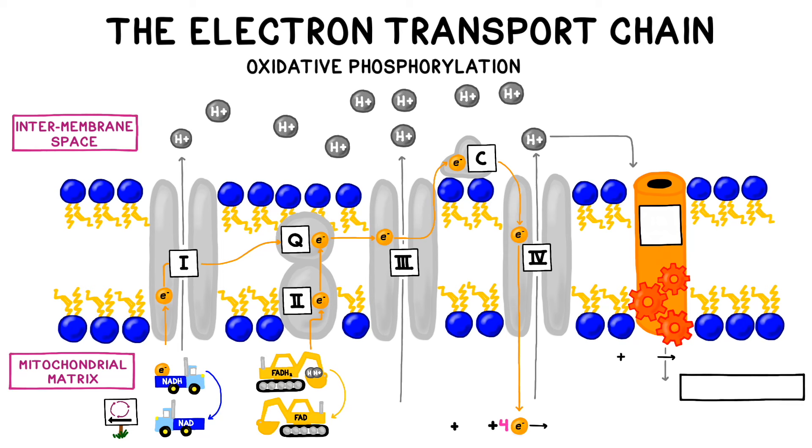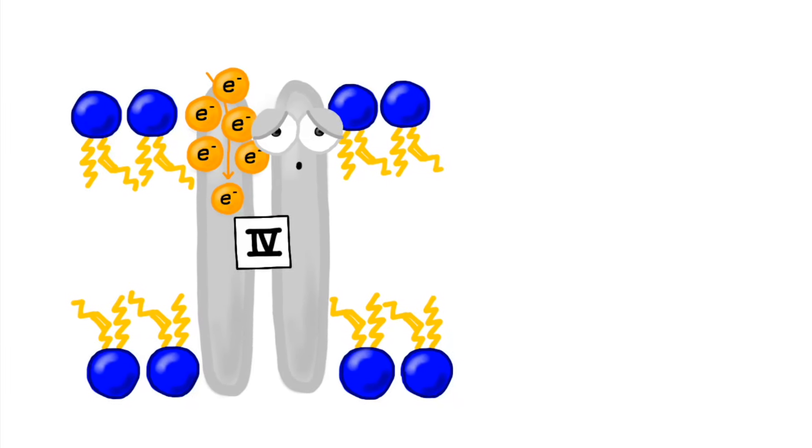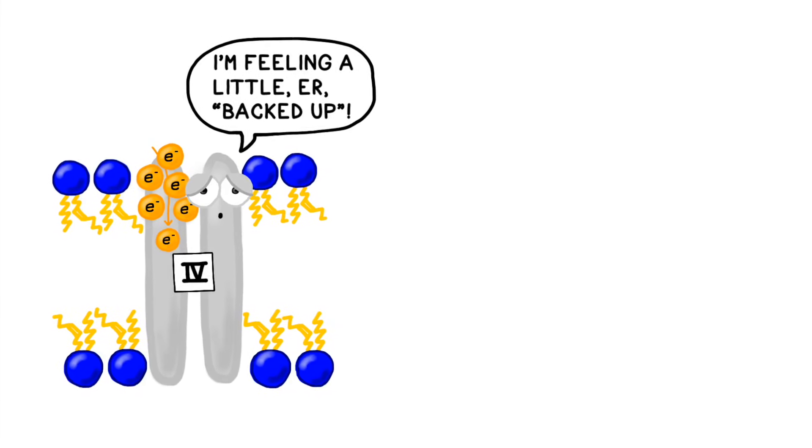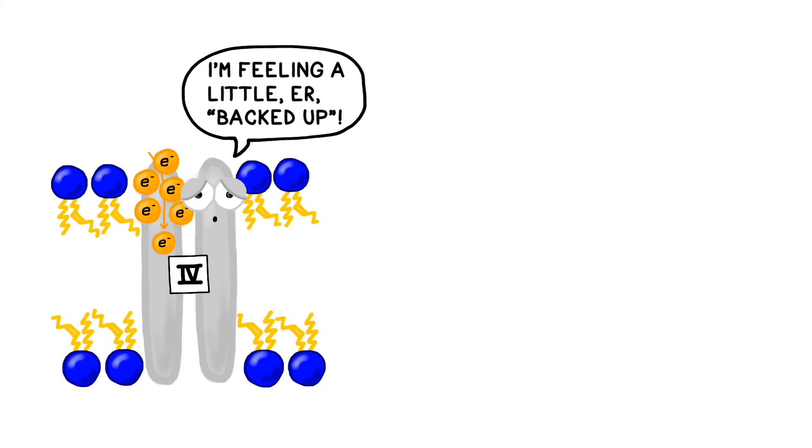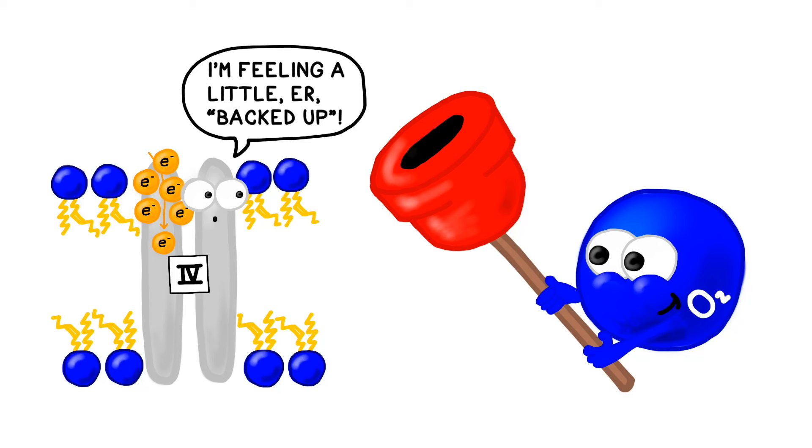Regardless of whether the electrons originated from NADH or from FADH2, they need to go somewhere once they reach the end of the electron transport chain. This is where we finally get to understand why oxygen is so important. Oxygen is known as the final electron acceptor in the electron transport chain. The spent electrons bind with protons and oxygen to form molecules of water. Without oxygen to pick up the electrons at the end of the chain, the proteins would become clogged with electrons. The pumps would stop working, the gradient would disappear, and then we couldn't recharge any more ATP. Essentially, cyanide, and suffocation in general, cause death via electron constipation. Unless oxygen arrives promptly to deal with the clog, the prognosis is crappy.